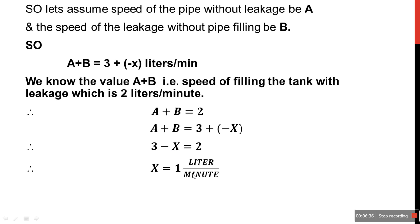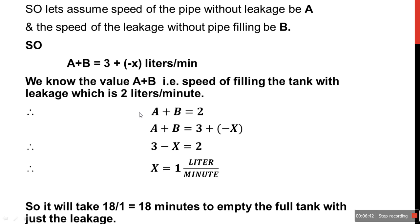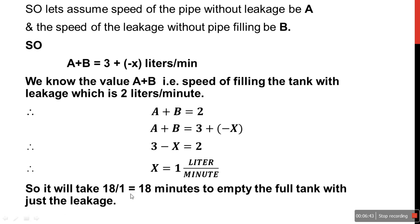So x, the speed of just the leakage emptying the full tank, is 1 liter per minute. The tank capacity is 18 liters, so it will take 18 divided by 1, that is 18 minutes, to empty the full tank with just the leakage present.